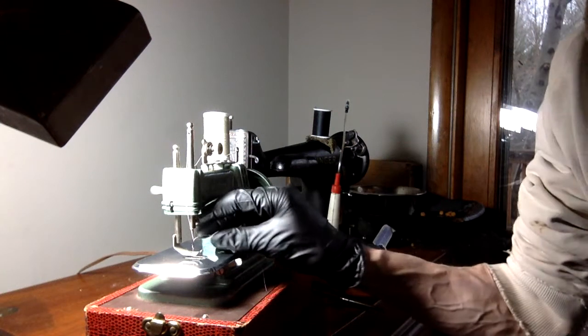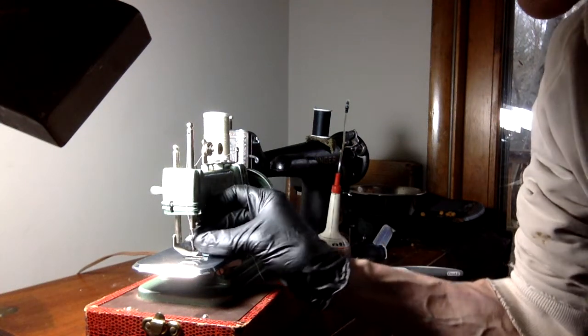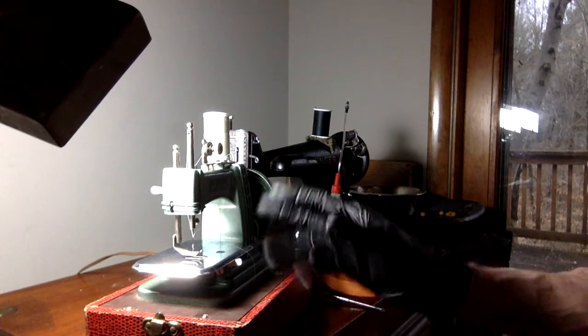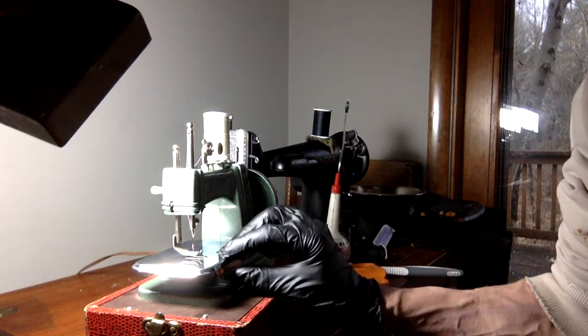I'm making this video in response to someone else's video. They were having problems with their stitch. There's a bobbin on this Betsy Ross toy sewing machine.